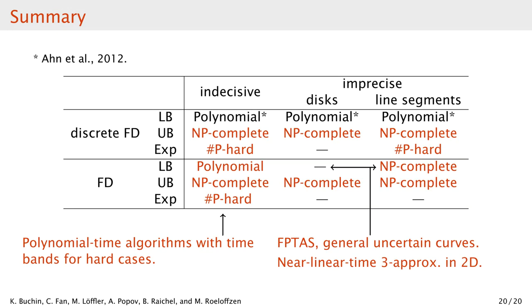To summarize, we have first covered the hardness results for the upper bound and expected case in different models for both discrete and continuous Fréchet distance, with the focus on the simplest case — discrete Fréchet distance in the indecisive setting. For indecisive trajectories, we discussed polynomial time algorithms for constant-width bands for all the applicable cases. Then we discussed the lower bound Fréchet distance: we presented a polynomial time algorithm for the indecisive case, showed NP-hardness in the line-segment model, and finally showed two approximation algorithms — one that works by discretizing the regions in the general case, and one that runs in near linear time but only works in two dimensions and for imprecise separated regions. This concludes the talk. Please contact me or the other authors if you have any questions, and thank you for listening.